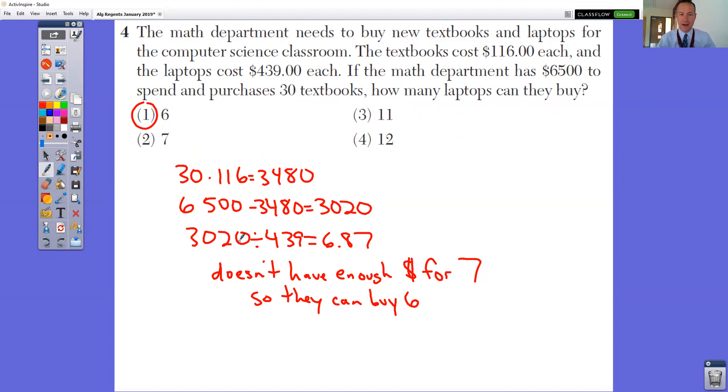So 30 textbooks times the $116 cost means they're spending $3,480 on textbooks. Subtract that from your budget of $6,500 so you have a remaining $3,020. Take that remaining number and divide by the cost of each laptop, $439. You can buy 6.87 laptops. You can't buy 0.87 of a laptop. So you only have enough for six of them. You would not round this to seven because you don't have enough money. You have to say that it would only be six.